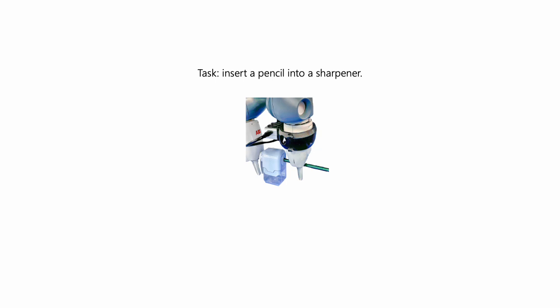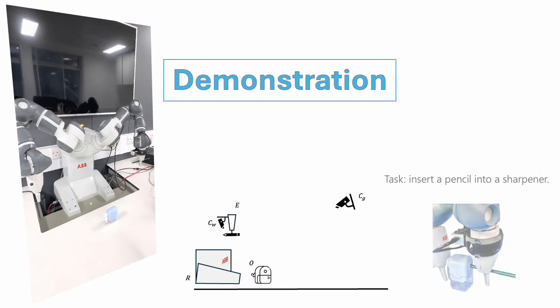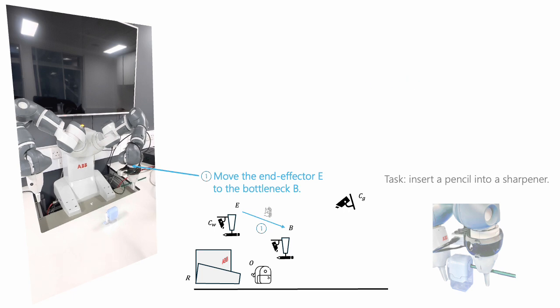Let us consider the task of inserting a pencil into a sharpener. During the demonstration, we first move the robot's end effector to a bottleneck pose, ensuring that the object is clearly visible to both the global camera and the waist camera.